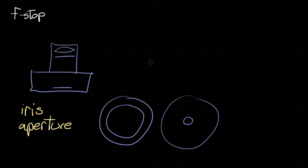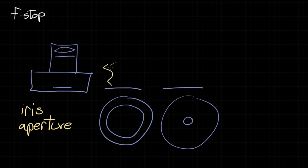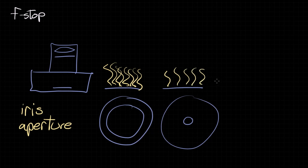This is good to know because most of the time you'll see the aperture referred to, but sometimes you'll see the iris referred to, and it's just good to know that usually we're just interested in the aperture. With an aperture open wide, you're going to be letting in a lot of light into your camera through the lens. But with a small aperture, you're not really going to be letting in that much light.